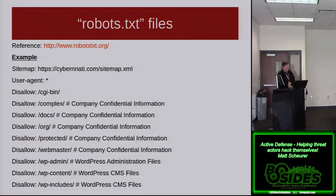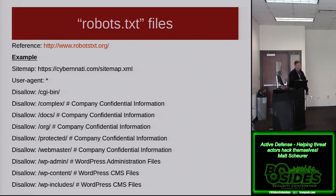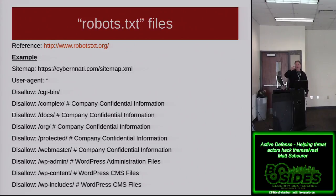The robots.txt file — you can read the reference on the formatting from the link. The first line tells the site where the sitemap file is. User-Agent star says regardless of what web browser or client is hitting the site, do not allow crawlers to index any of these folders — this is where the active defense content is. This is our keep-out sign so legitimate search engines won't pick up these directories and they won't end up in search results.